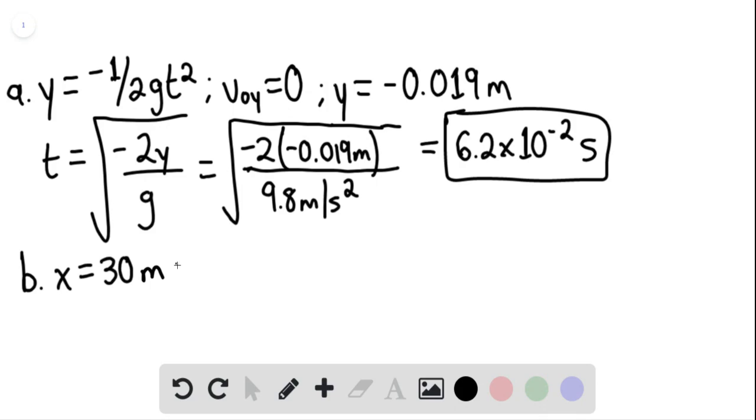we can say that x is equaling 30 meters, and this is equaling the initial velocity multiplied by t. So to find the initial velocity, which is all in the x direction,